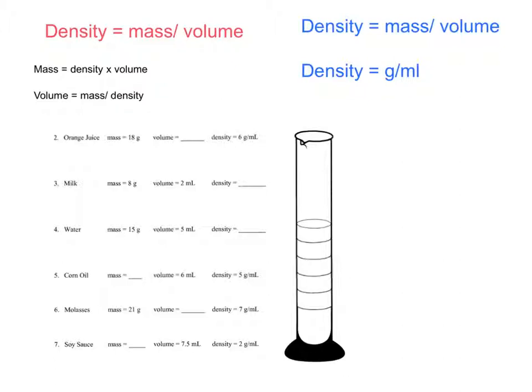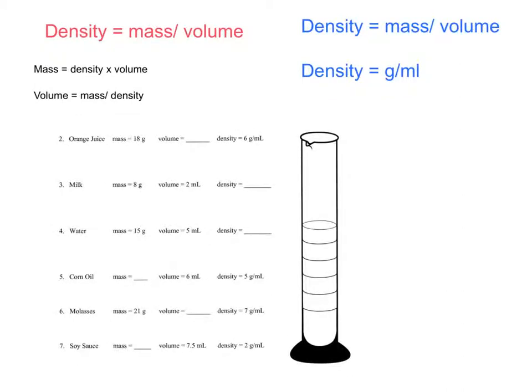On this first one, we have orange juice that has a mass of 18 grams, an unknown volume, and a density of 6 grams per milliliter. We can use the equation that volume equals our mass divided by our density, and we get a volume of 3 milliliters. Mass is measured typically in grams, volume in milliliters, and therefore density's units are grams per milliliter.